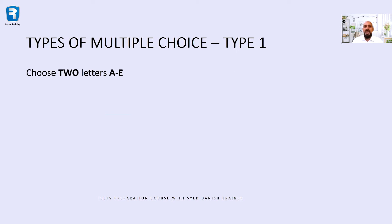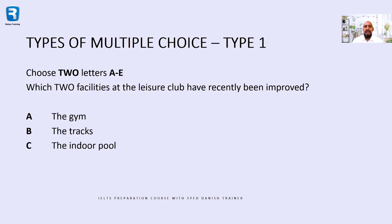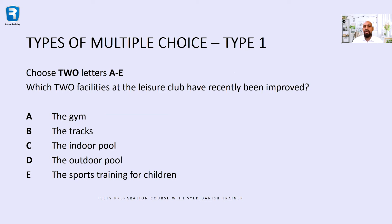Multiple choice question types are different. For example, choose two letters from A to E — two answers are correct. For instance: which two facilities at the Leisure Club have recently been approved? Choose two answers. For example, you have to choose a gym or an indoor pool.